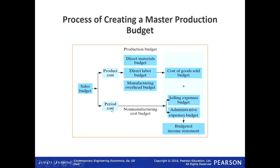We have seen before what period costs are — non-manufacturing costs which are selling and administrative expense budgets. So at the end you will have your budgeted income statement, which is basically: sales budget minus cost of goods sold minus selling expense minus admin expense. At the end you will have your budgeted or expected income statement.